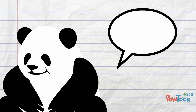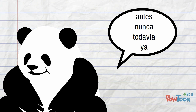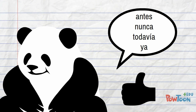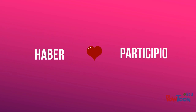As mentioned before, we typically use this structure to represent a sequence of events. We can often use the words antes, nunca, todavía, and ya to help indicate that one action occurred before another. Be careful with your sentence structure, as we never want to separate the two pieces of the pluscuamperfecto.